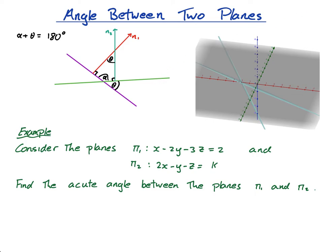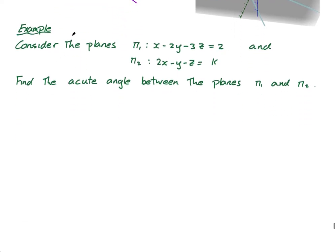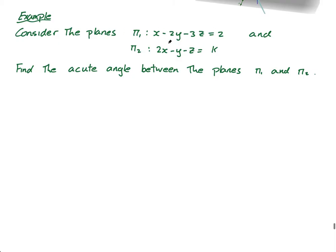Okay, let's do an example. So consider the planes π₁: x - 2y - 3z = 2 and π₂: 2x - y - z = k, find the acute angle between the two planes. So I want the two normals. So the normal, let's call it n1. n1 equals, this is the normal of π₁, it's (1, -2, -3). Again, I definitely hope at this stage, you understand how to do that. It's just (1, -2, -3), that's the normal, n1.